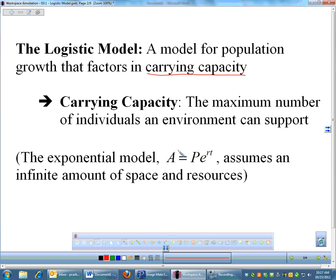The exponential model, A equals Pe^rt, assumes you have an infinite amount of space and resources. So if you put a bunch of rabbits on an island, you're assuming there will always be enough food and space. They continue to grow with no limit. But in the real world, there is carrying capacity where eventually the rabbits will run out of food or space, and when that happens they don't grow as fast—it starts to level off.